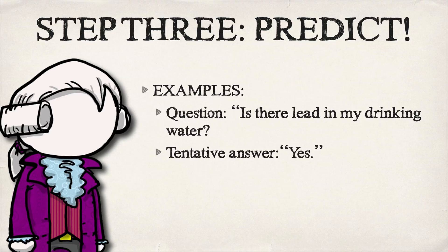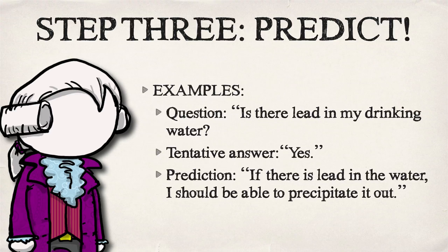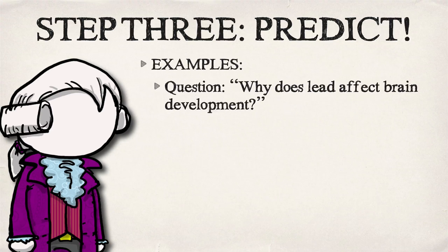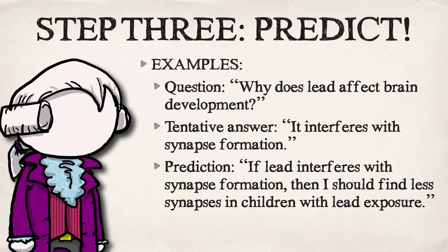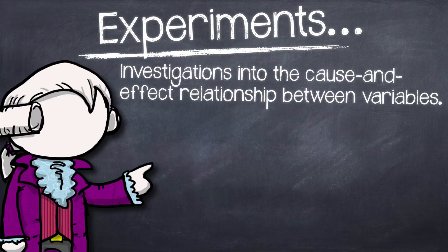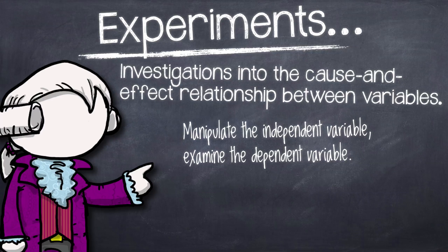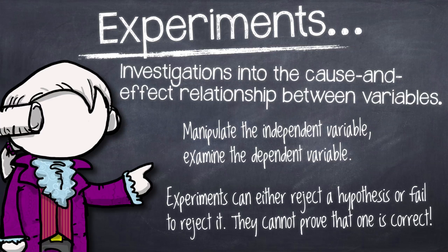If you think that there's lead in your drinking water, then you could predict that you should be able to precipitate the lead out through a chemical reaction. Or if you think that lead interferes with synapse formation, then you might predict that you would find fewer synapses in children with lead exposure. An experiment is an investigation into the cause and effect relationship between variables — you manipulate the independent variable and examine the dependent variable. Experiments can either reject a hypothesis or fail to reject it, but remember that experiments don't really prove things to be correct.